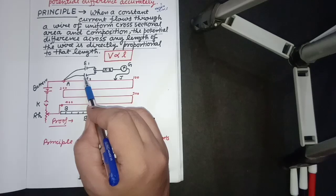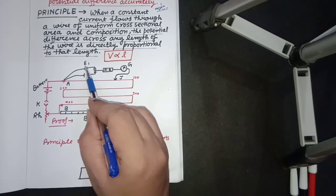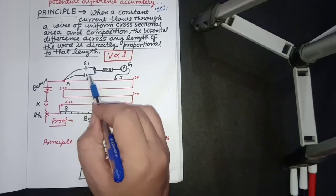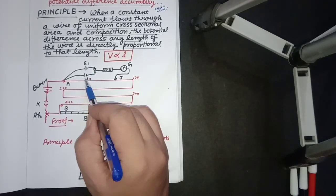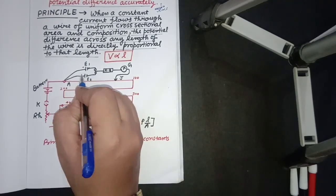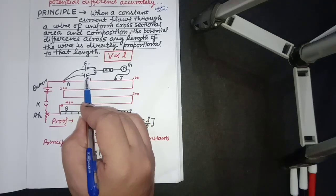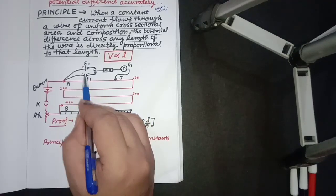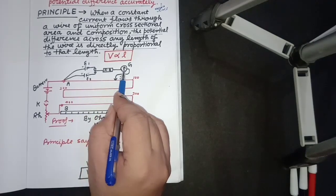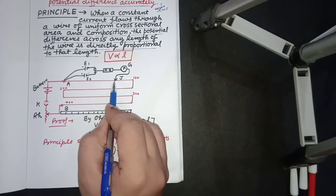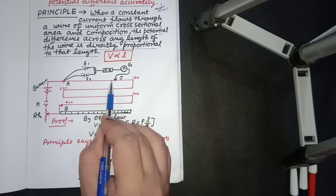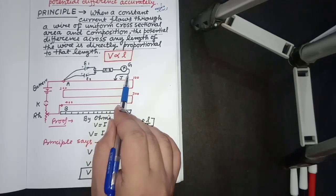For many applications involving two EMFs, or when we use a single cell where we need to calculate internal resistance, we use the potentiometer. Suppose we have two cells connected with a two-way key, along with a resistance box and galvanometer through a jockey connected to this experiment.